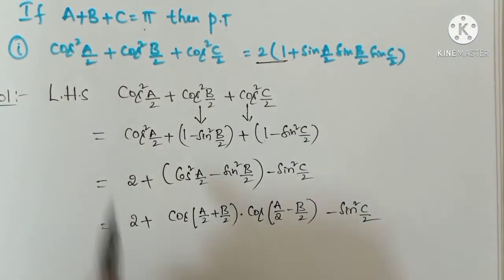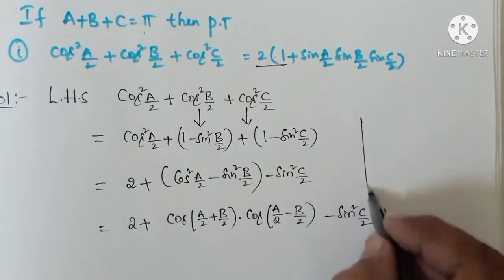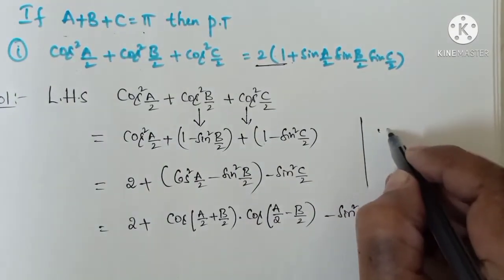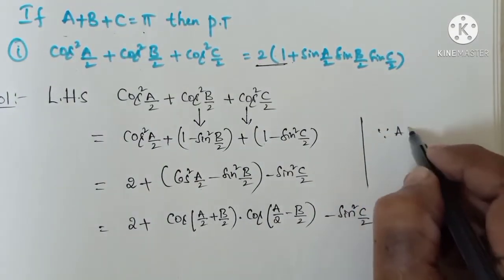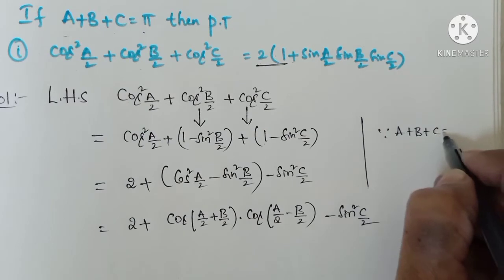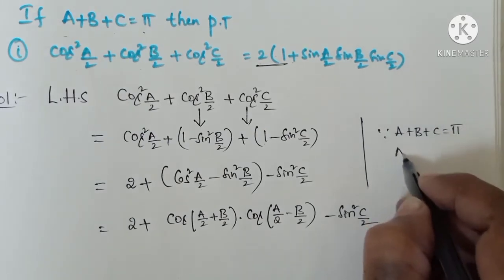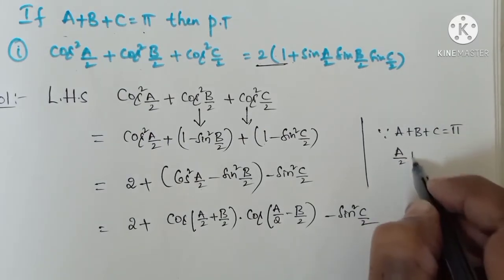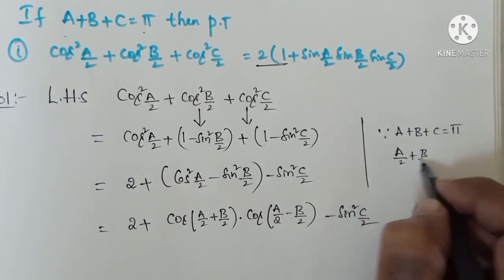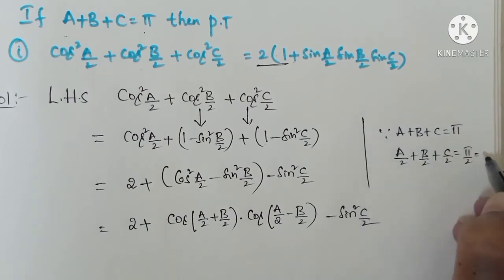We now use the given condition: a plus b plus c is equal to pi. Since a plus b plus c equals pi, dividing by 2 gives a by 2 plus b by 2 plus c by 2 equals pi by 2, that is 90 degrees.